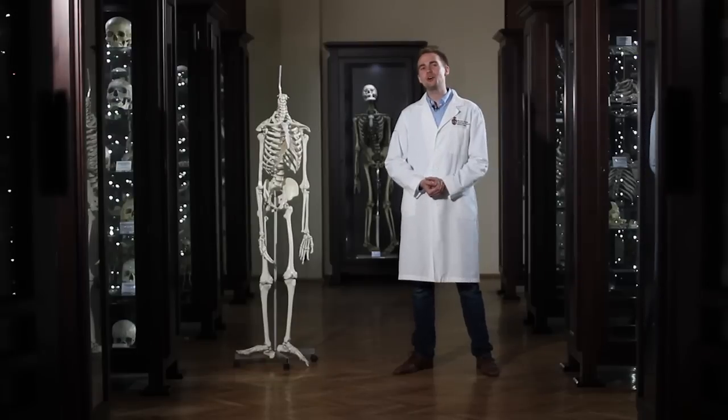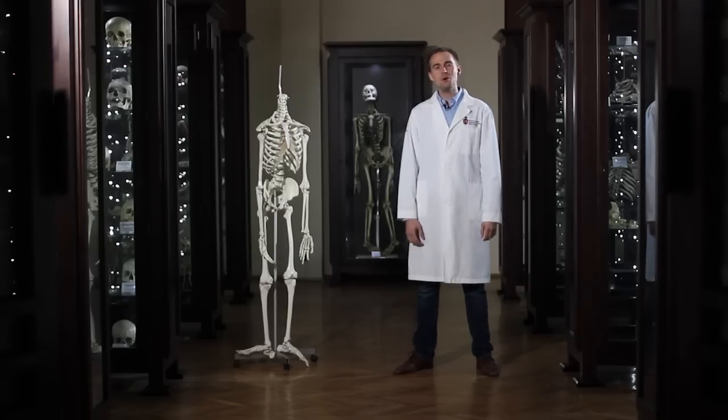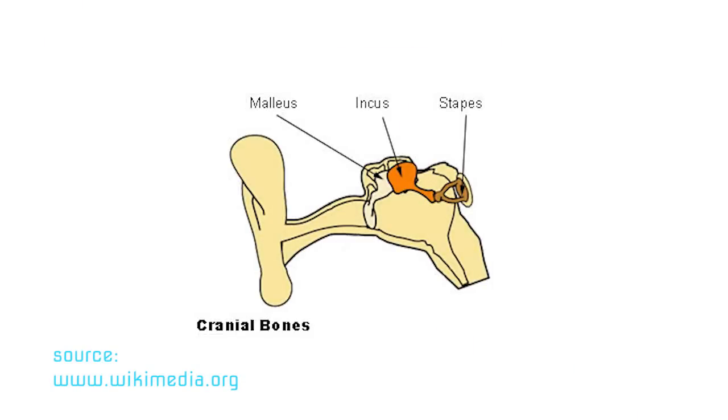The longest and strongest bone in the body is the femur. The smallest bone in our body is the stapes, and it's found in the ear.